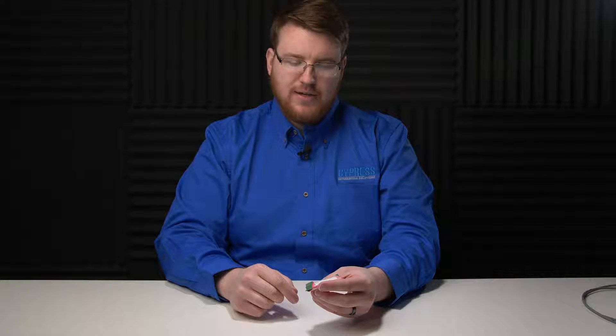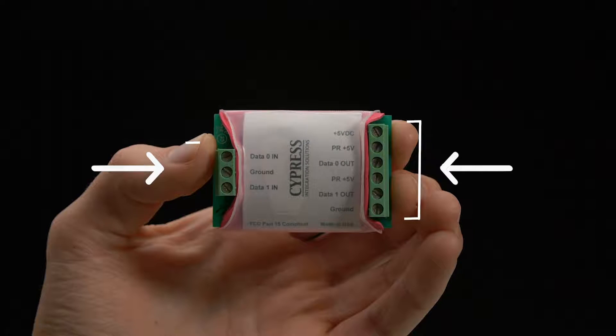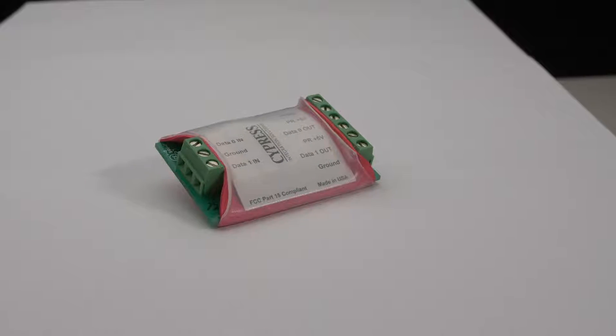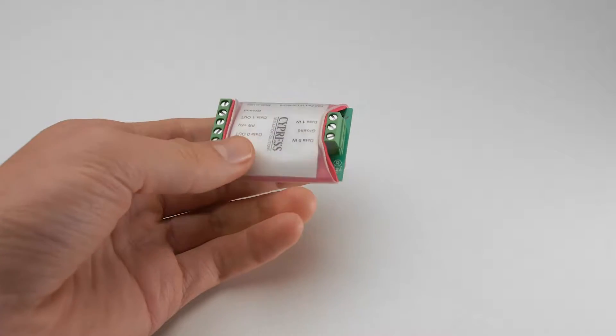There are two headers on the CVX OPTW: The J1 Input Header and the J2 Output Header. Each header is its own circuit connected by opto-isolators in the middle of the board. This is how the CVX OPTW isolates the Wiegand signals.